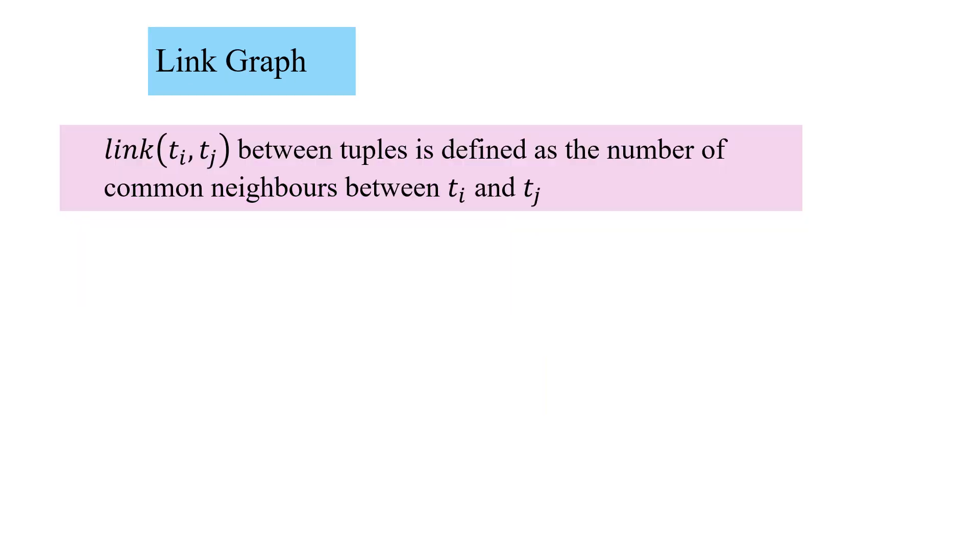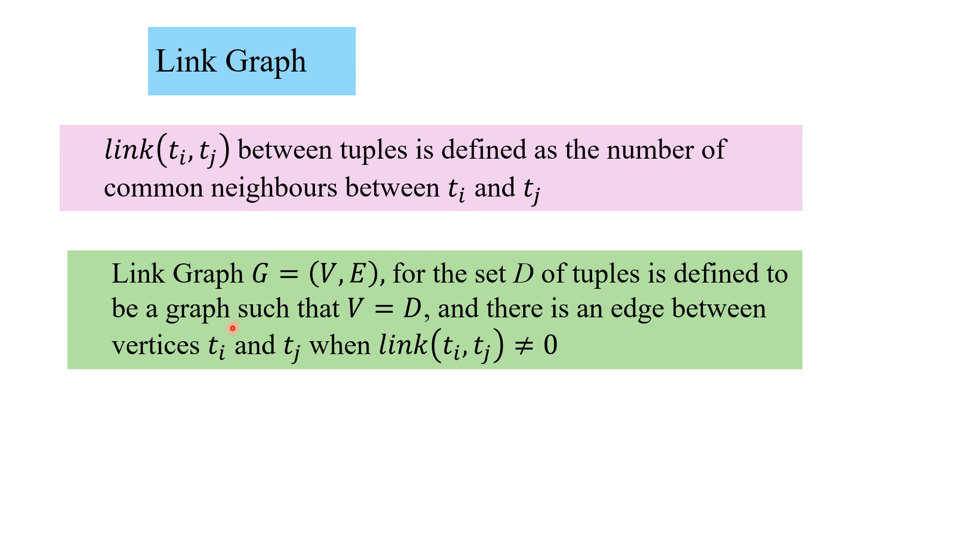Then the concept of link graph. Link (ti, tj) is the number of common neighbors between ti, tj. First we said when can a pair be neighbors, then we say pair of common neighbors. The link graph for the set d of tuples is defined such that the vertex set is the data points, and there is an edge between ti, tj when this link is non-zero. Link is the number of common neighbors, meaning at least one common neighbor has to be there for there to be an edge in the link graph.